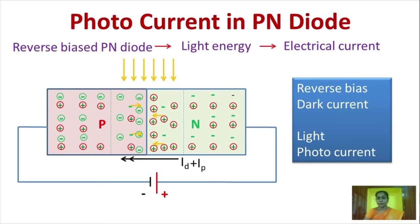The photocurrent increases as the level of illumination increases for a given reverse voltage. So, in the operation of photodiode, one has to remember: the diode should be in reverse bias, the current produced when the device is not exposed to light is called dark current, and the current produced when the device is exposed to light is termed as photocurrent.